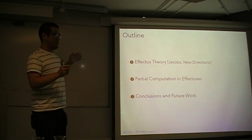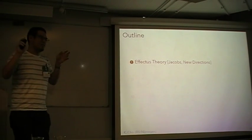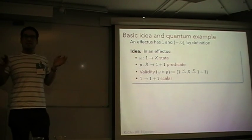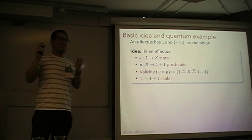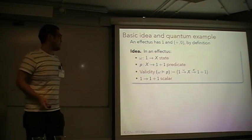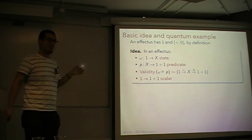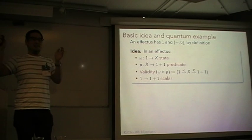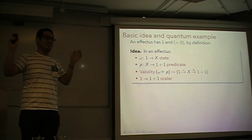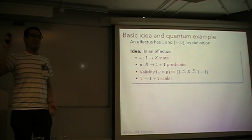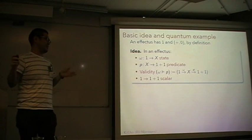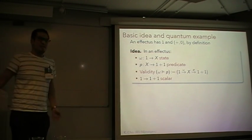In the first half of this talk, I would like to give a short introduction to effect theory. I will give you the complete definition of effectus in five minutes, but for now: an effectus has a final object one and finite coproducts by definition. The basic idea is to think of arrows from one as states, and arrows into one plus one as predicates. Validity of a predicate on a state is simply defined by composition. Arrows from one to one plus one are considered as scalars. So this is a very simple idea, but it works.